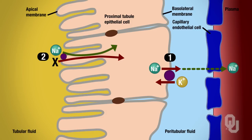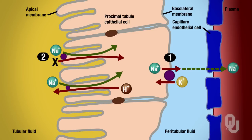X can be glucose, amino acids, vitamins, and calcium, for example. Next, another way to transport sodium out of the lumen: sodium is at high concentration in the lumen moving toward lower concentration, and hydrogen ions move from a low concentration in the cytoplasm toward a high concentration in the renal tubule lumen. Number three is therefore secondary active transport — specifically sodium-hydrogen ion countertransport. Note that hydrogen ions are not being reabsorbed here; instead they are being secreted.